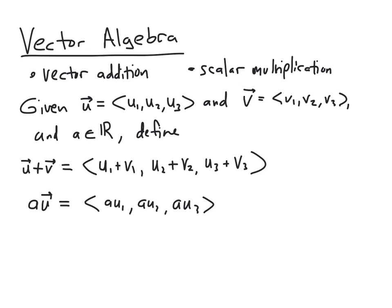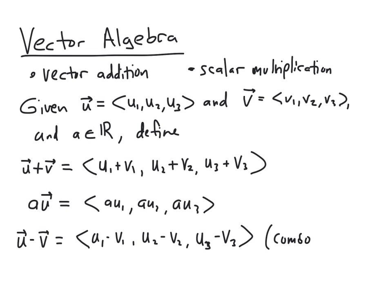We also have vector subtraction, though it's just a combination of the previous two. If we choose the scalar a to be negative 1, we can find the negative of a vector. Adding negative v to u gives subtraction, resulting in components u1 minus v1, u2 minus v2, and u3 minus v3. So this doesn't strictly need its own definition, but we'll indicate it here just to be safe.